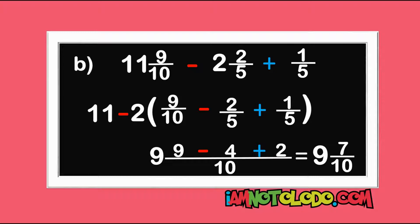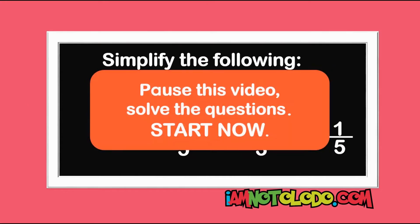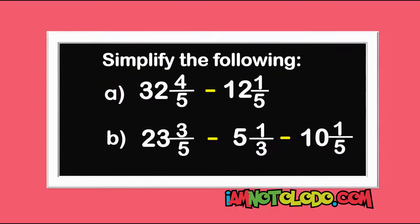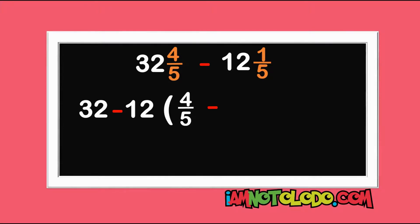The key first thing is to separate the whole number from the fractions: 32 minus 12. Next step, open a bracket: 4 over 5 minus 1 over 5. Close your brackets. This equals 32 minus 12, which is 20.